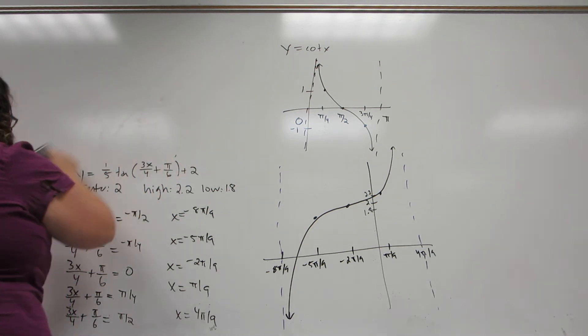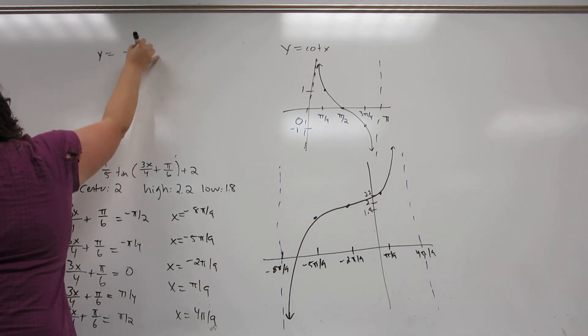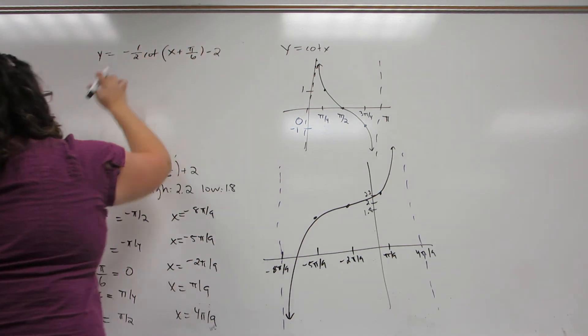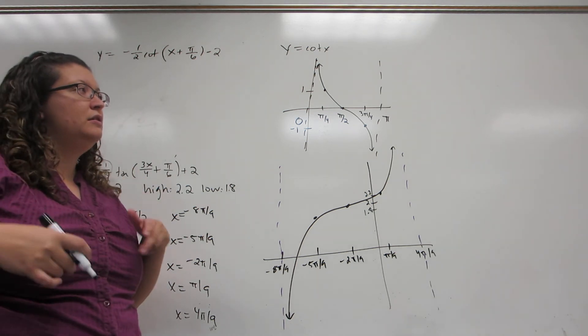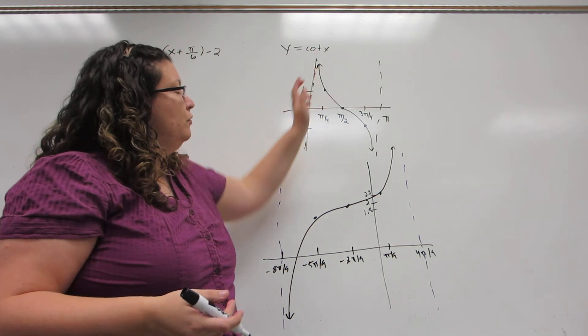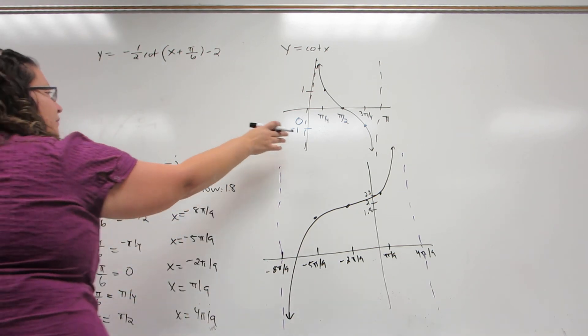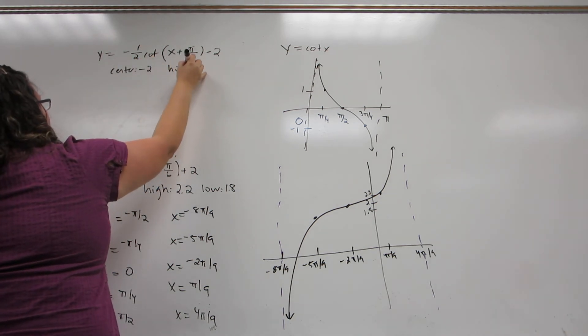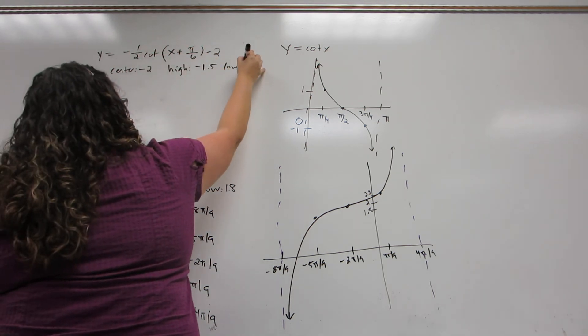Now let's do another example, a cotangent this time. You notice there's a negative sign in front. As before, negative turns the graph upside down, essentially. So it will flip it, meaning that a negative cotangent will move up, just like a tangent does. But it's still going to have the quarter points of a cotangent graph. So my center will be negative 2, my high will be negative 2 plus 1 half, and my low will be negative 2 minus 1 half.